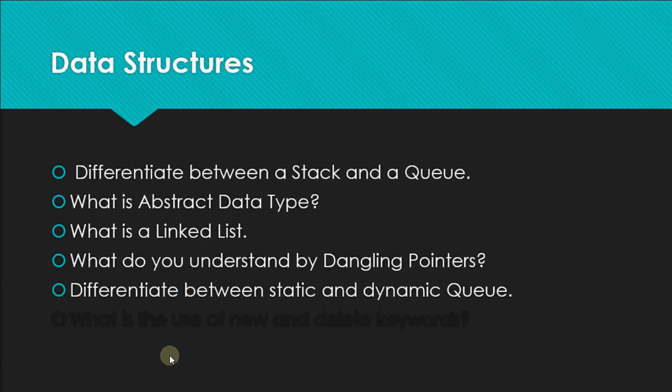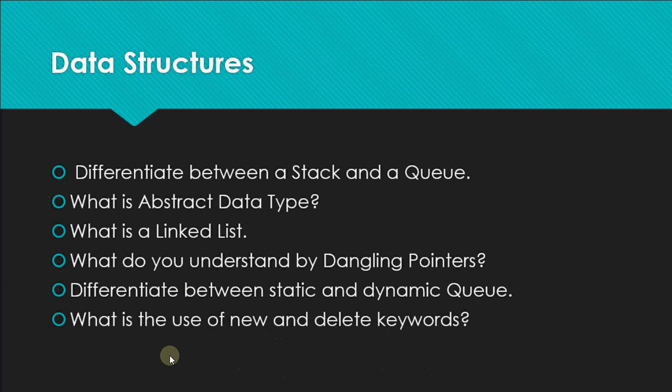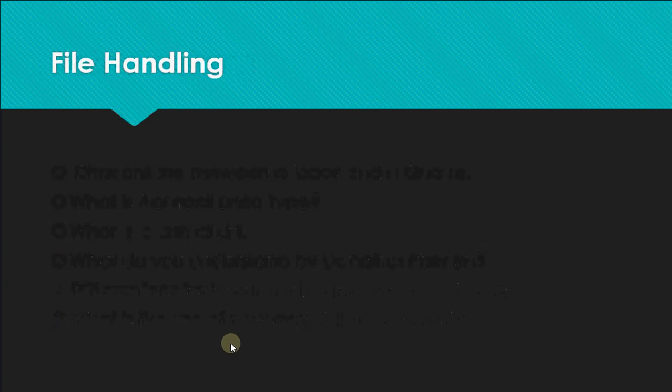What is the use of the 'new' and 'delete' keywords? These are very important keywords. 'new' is used to allocate memory during the execution of the program — if you need to allocate memory while your program is already running, you use 'new'. If you want to de-allocate memory while your program is running, you use 'delete'.